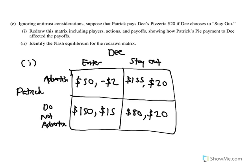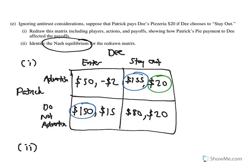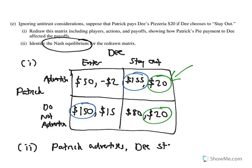For E2, it asks for the Nash equilibrium — notably it does not say 'or equilibria,' suggesting there's only one. If Patrick is in play and Dee enters, I get $50 or $150, so I want $150. If Dee stays out, I get $155 or $80, so I want $155. For Dee, if Patrick advertises, she gets negative $2 or $20 — she prefers $20. If Patrick doesn't advertise, she prefers $20 over $15. There's now only one box with two circles, so the new Nash equilibrium is Patrick advertises and Dee stays out.